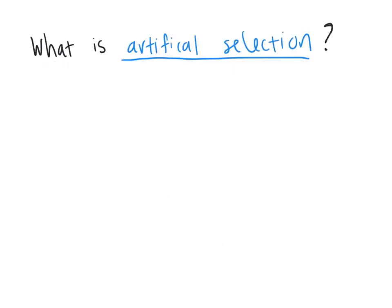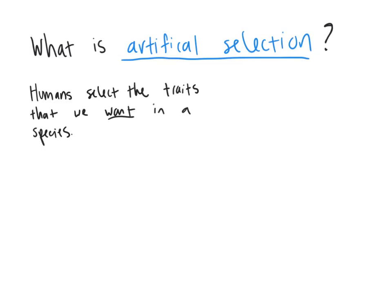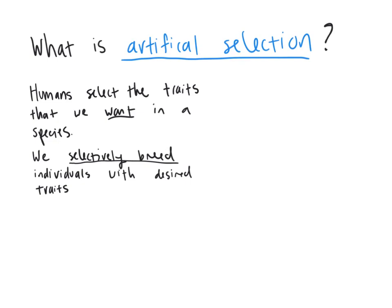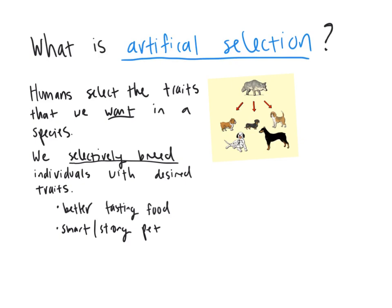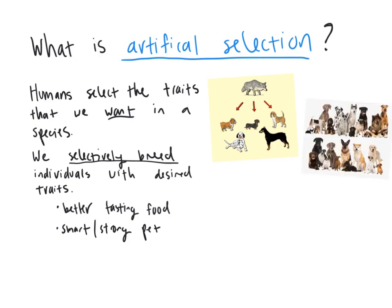The last topic of this video is artificial selection and how it differs from natural selection. Artificial selection is when humans select the traits they want in a species and selectively breed based on those desired traits — whether that's better-tasting food or smarter, stronger animals. This can cause a change in the species over time. One example is dog breeding: all dogs originated from a wolf species, and the many different dog breeds we see today each have characteristics that have been selected for by people.